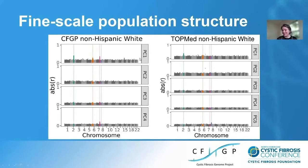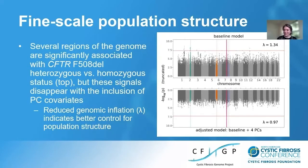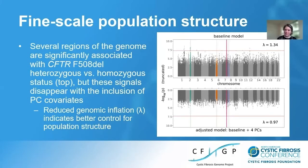It looks like PC1 is tagging stuff related to CFTR variation specifically within the CFGP. We wanted to know what variants across the genome are associated with F508del, so we could recognize them if they show up in later GWASs — which would suggest that GWAS didn't adequately control for fine-scale population structure. We performed GWASs using an outcome variable defined by being either heterozygous or homozygous for the F508del allele at CFTR. The x-axis is chromosomal position, and the vertical axis is the minus log10 p-value — a measure of strength of association between variation and the F508del outcome.